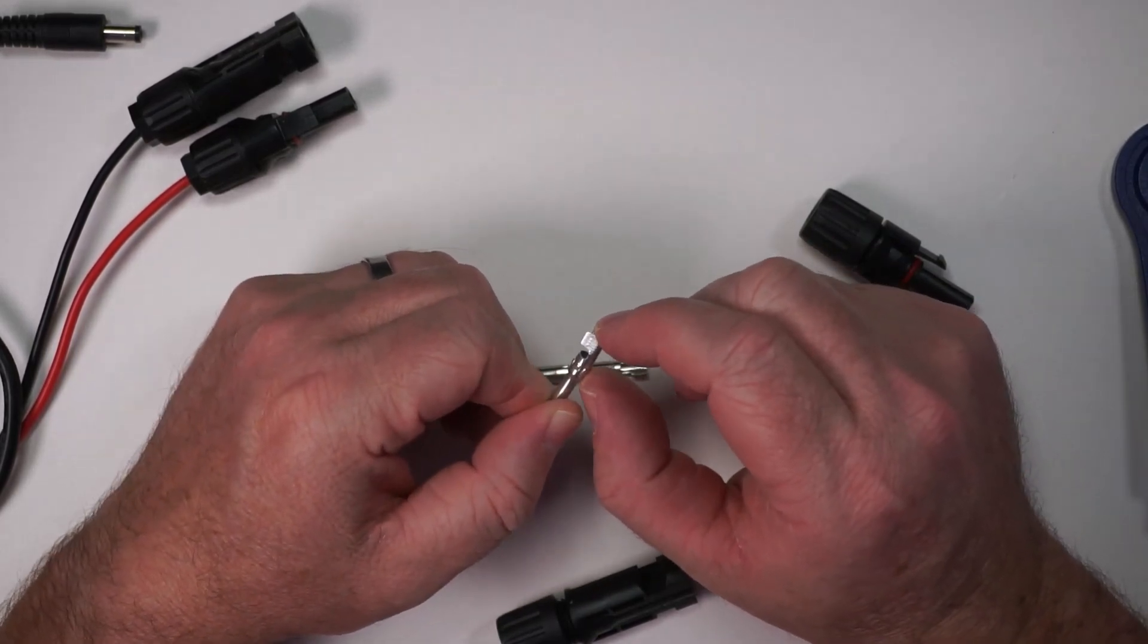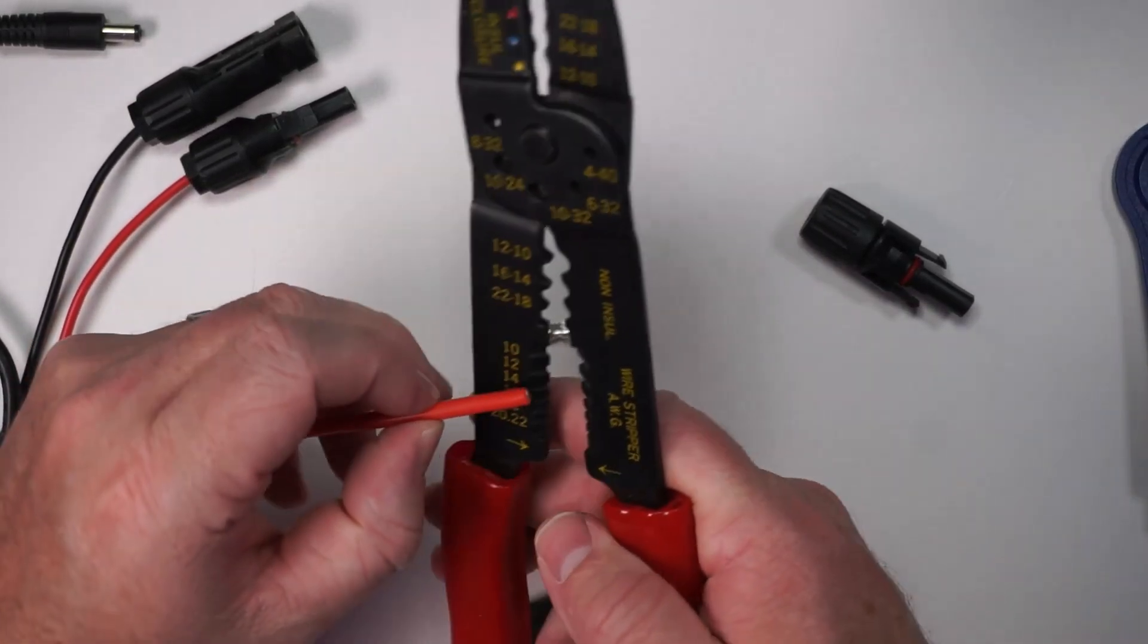So for crimping, for stripping the wire it doesn't really have any instructions for how you should do that, but it looks like we can strip about that length. So I'm going to go ahead and do that now. So I've got my red wire here. This is 12 gauge wire, so I'm going to go ahead. Alright, looks like a twist. Looks like I stripped a bit too much but that should be okay with this.